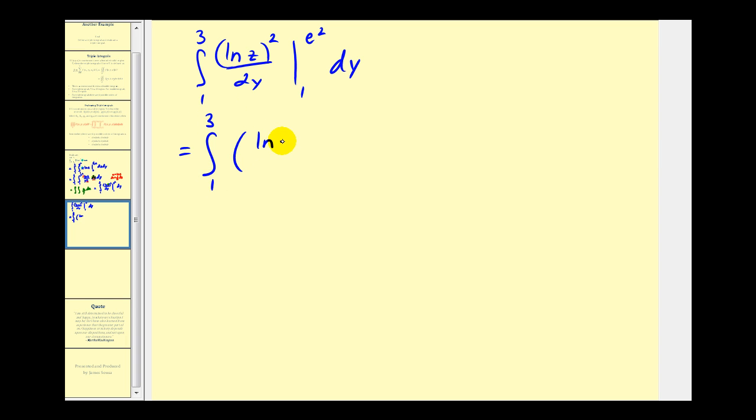So we'll have natural log e squared squared all over two y minus, when z is equal to one, we'll have natural log one, which is equal to zero.